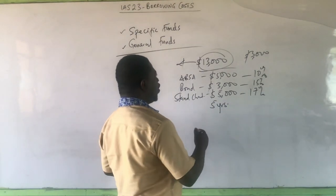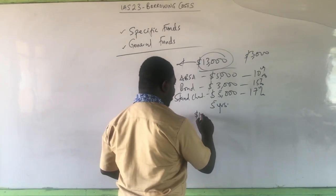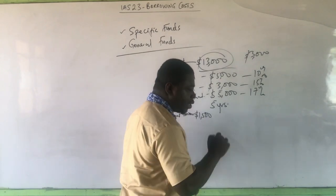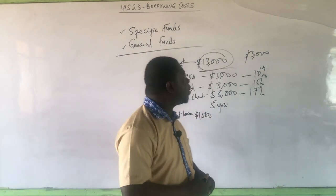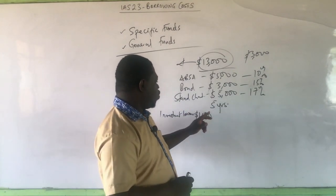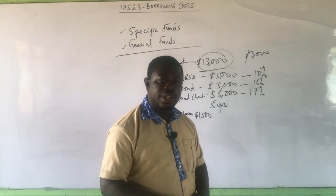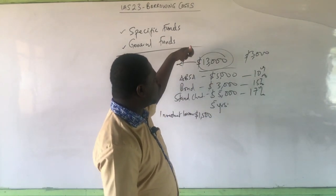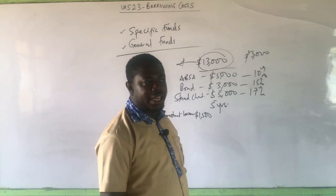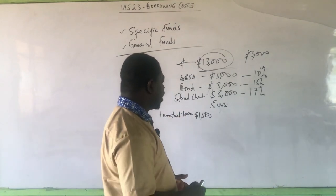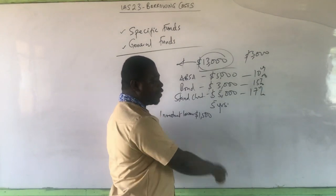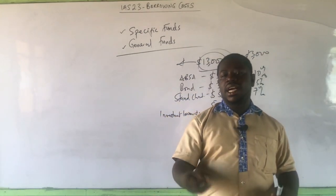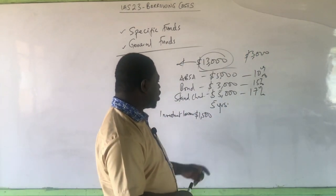The idle cash invested will bring in investment income. At the end of the two years, let's assume we got an investment income return of $1,500. The general principle is: when you get investment income, you reduce your borrowing cost by the investment income from the investment of idle cash. So when we apply the weighted average interest rate on the amount needed to construct the qualifying asset and get, say, $5,000 as interest, we reduce that $5,000 by the $1,500 to get $3,500 — that will be the borrowing cost to be capitalized.